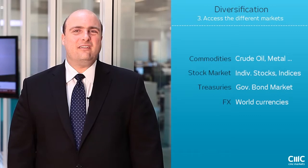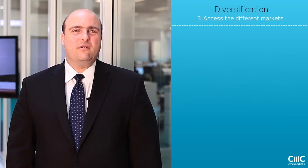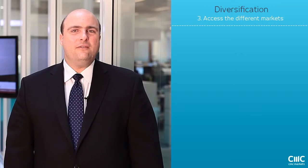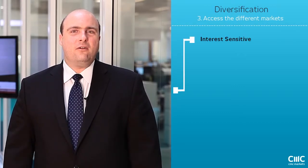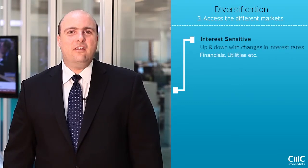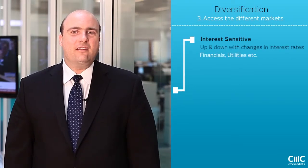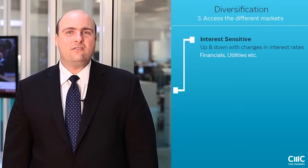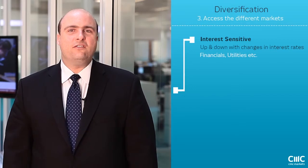Markets can be divided into four major groups which respond similarly to different trends. The first group is the interest sensitive group. These are areas that tend to go up when interest rates are going down and tend to go down when interest rates are going up. They include financial services stocks, utility stocks, telecommunications stocks, plus bonds and treasuries.